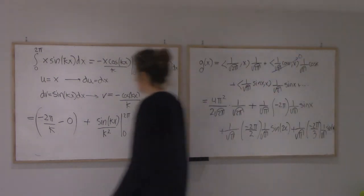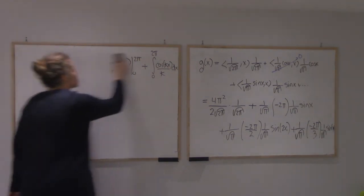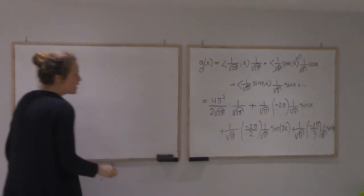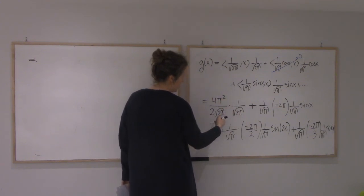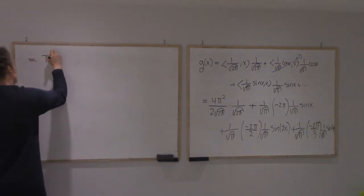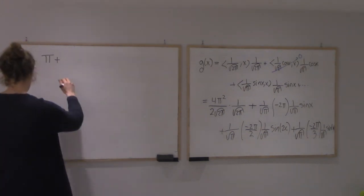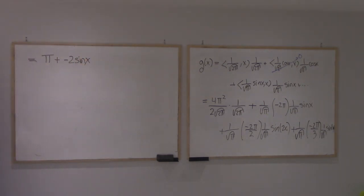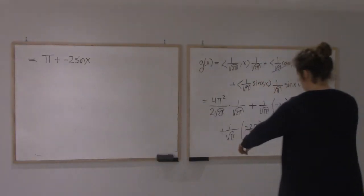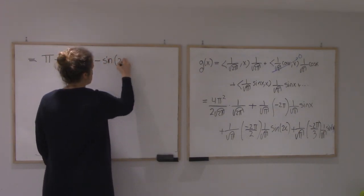So what I'm getting is... This is 2π, so I'm getting 2π, 4π, so I'm getting π. So the constant is π. Now the π cancels over there, so I get minus 2 sine of x. And then this term, the π's will cancel, and the 2 will cancel as well.